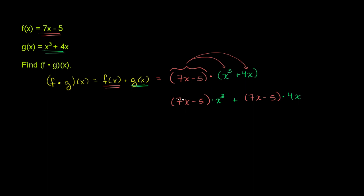And now we can do the distributive property again. When we distribute, you multiply x to the third times 7x and times negative 5. x to the third times 7x is 7x to the fourth power. x to the third times negative 5 is minus 5x to the third. And then you distribute the 4x over the 7x: 4x times 7x is plus 28x squared. 4x times negative 5 is minus 20x.